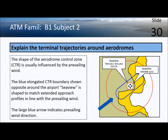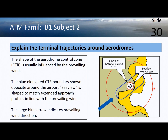Terminal trajectories around aerodromes: the active runway is determined by the wind at the time. Each concrete runway is identified by one of two numbers representing the magnetic heading of the approach from either direction. The CTR boundary is typically elongated in line with the approaches.